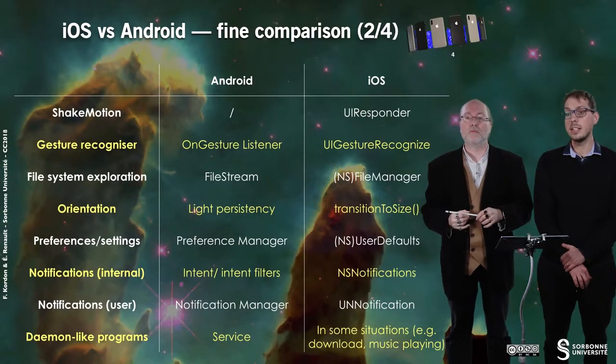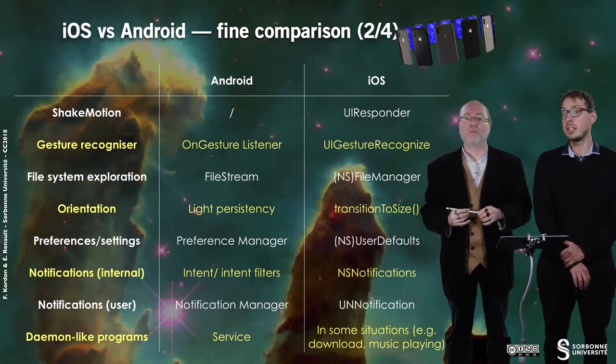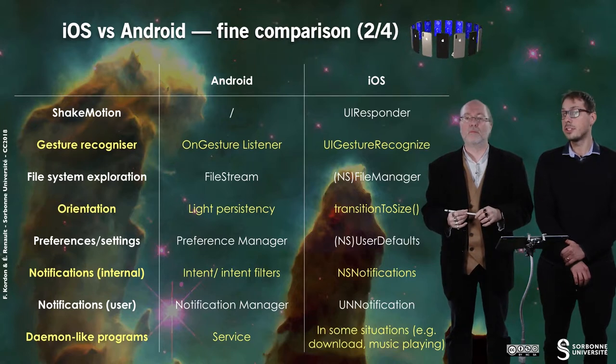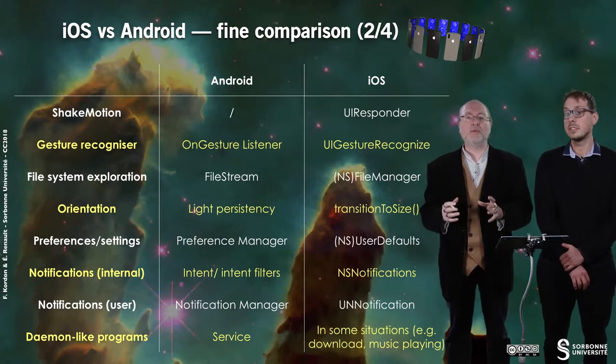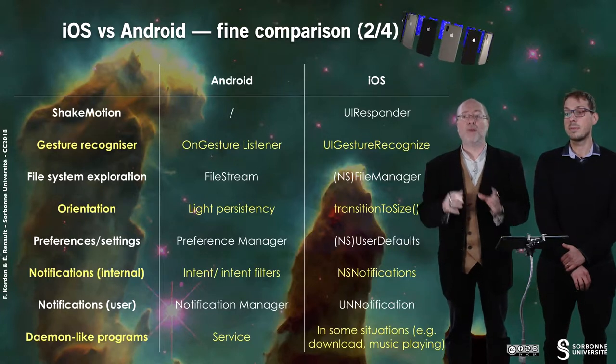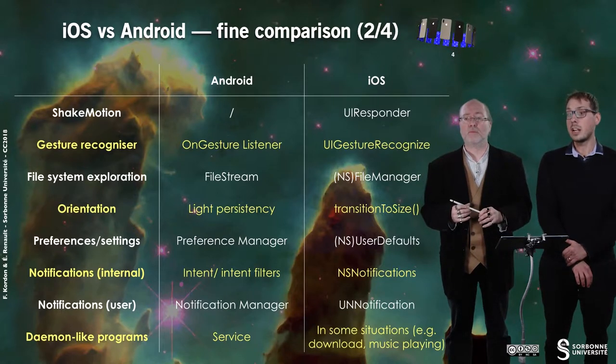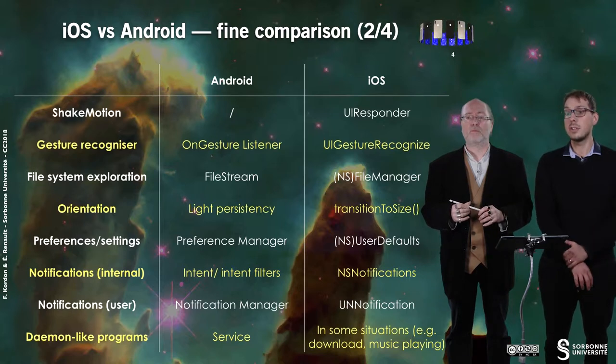Concerning shake motion, Android does not provide any built-in tool for detecting shake motion, while iOS provides such detection through the UI Responder. This is one of the very rare features available on one system but not the other. For other gestures, Android provides a GestureDetector listener which allows detecting any kind of gesture, and the counterpart in iOS is of course UIGestureRecognizer.